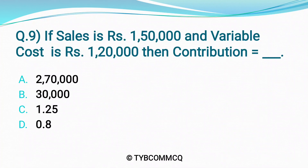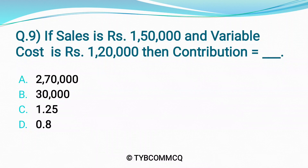Question No. 9: If Sales is Rs. 1,50,000 and Variable Cost is Rs. 1,20,000 then Contribution is equal to ___. Option A: 2,70,000. Option B: 30,000. Option C: 1.25. Option D: 0.8. The correct option is Option B — Rs. 30,000.